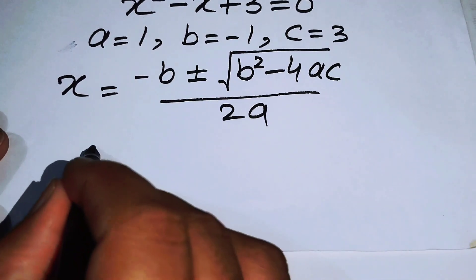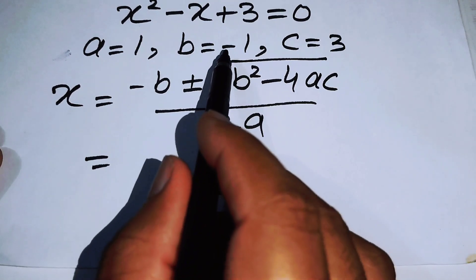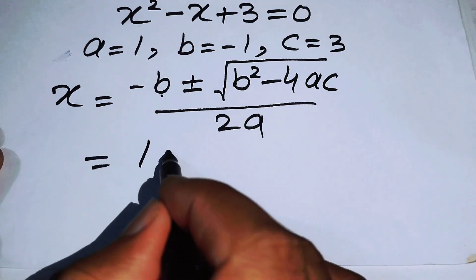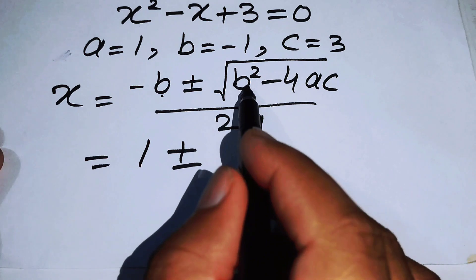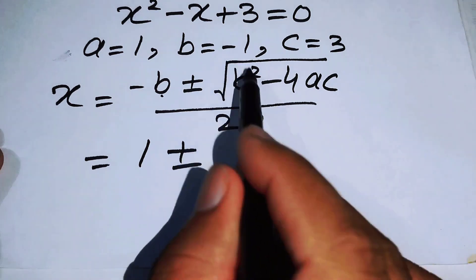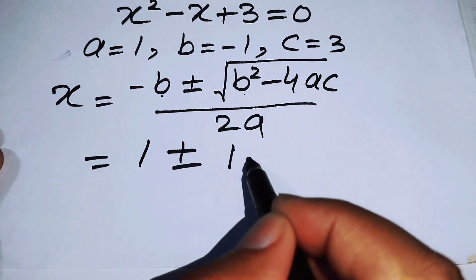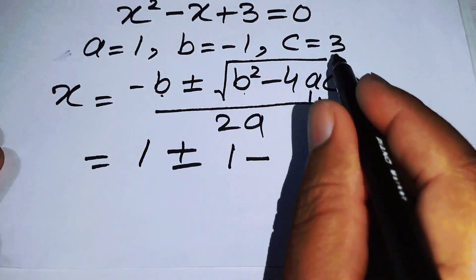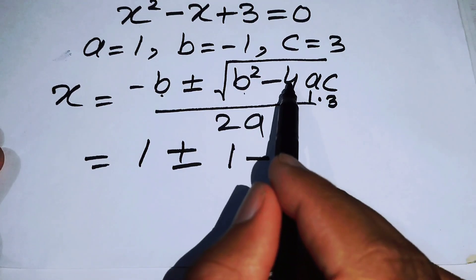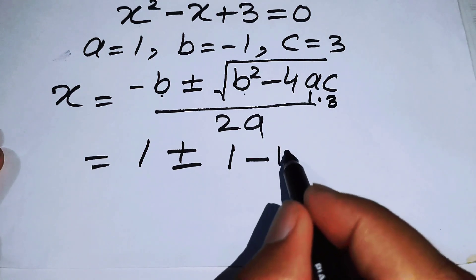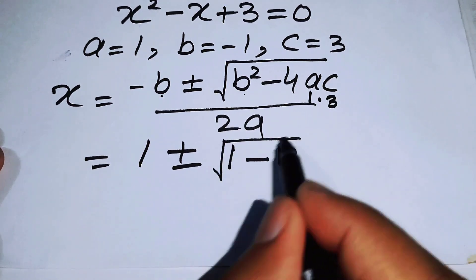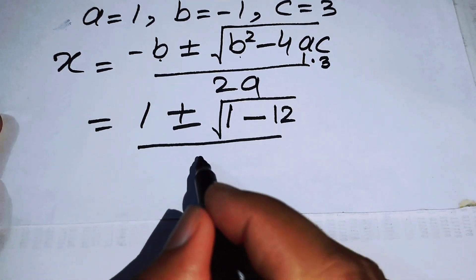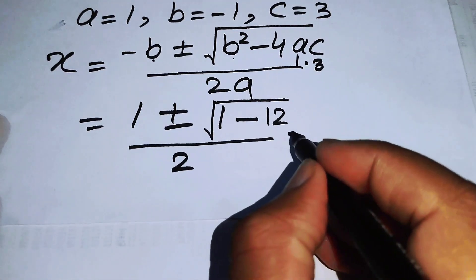Since b equals minus 1, minus b becomes plus 1. For b squared: minus 1 squared is plus 1. Then 4 times a times c: a is 1 and c is 3, so 4 times 3 is 12. The denominator is 2 times a, and since a equals 1, that is 2. So we get 1 plus or minus the square root of 1 minus 12 over 2, which is 1 plus or minus the square root of minus 11 over 2.